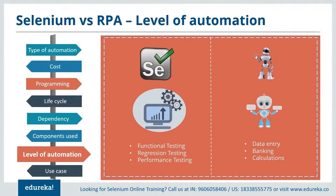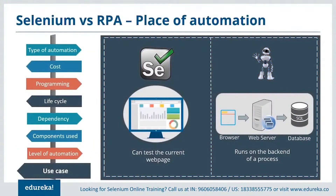Regarding the level of automation: Selenium does not automate any clerical processes — it automates functional, regression, and performance testing. Whereas RPA automates all clerical processes like data entry, calculations, and so on. As for the use case: Selenium works on the front end of the process, whereas RPA works on the back end. Selenium can test only the current web page, whereas RPA deals with time-consuming processes. The browser details are sent via the web server and stored in sequence onto the database.